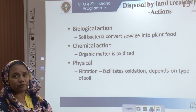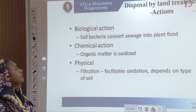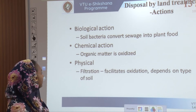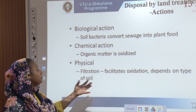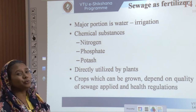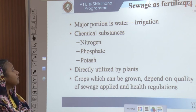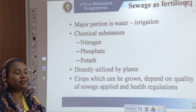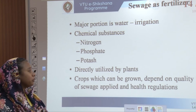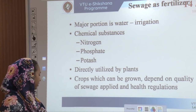Several actions happen during land disposal. First is biological action, where soil bacteria convert sewage into plant food. Second is chemical action, where organic matter is oxidized. Third is physical action, where filtration facilitates oxidation depending on soil type. This sewage also acts as fertilizer, since the water applied is mostly for irrigation purposes. Chemical substances like nitrogen, phosphate, and potash are present in the land and can be directly utilized by plants or crops, depending on the quality of sewage and relevant health regulations.